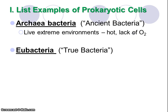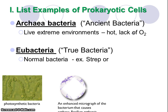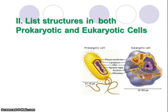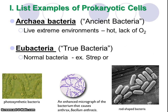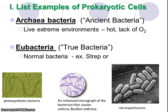Then we have another type of bacteria called eubacteria. These are our normal, true bacteria — most of the things you would think about that get you sick or cause an infection, like strep, or maybe photosynthetic bacteria. We have some bacteria that are different shapes. One here is actually the anthrax bacteria. So lots of different types of things are bacteria. We usually think about bacteria being bad, but we'll learn about ways bacteria are good throughout the year. Bacteria are a major example of prokaryotes, and just know there are two major categories of bacteria.